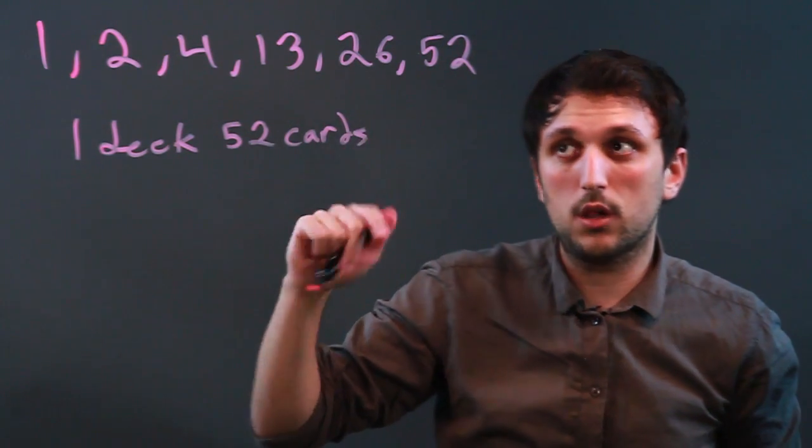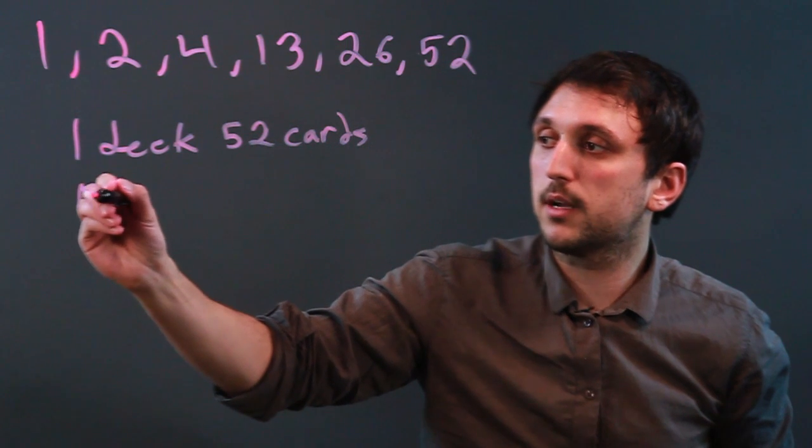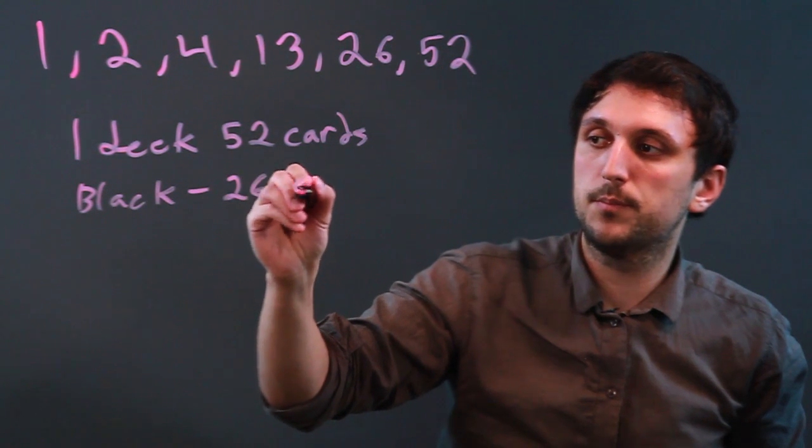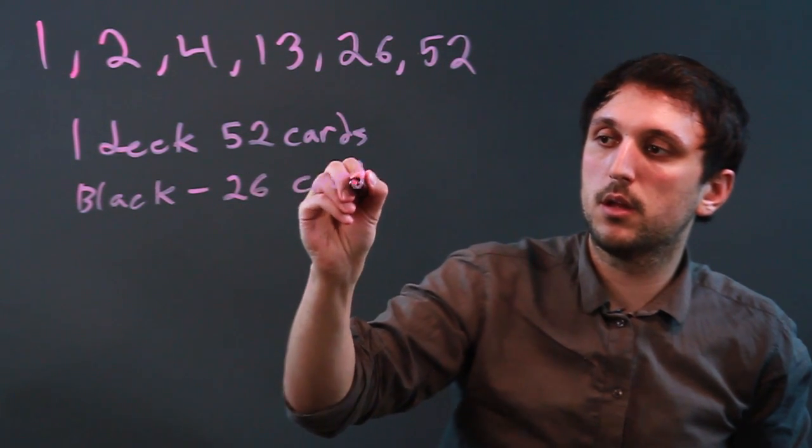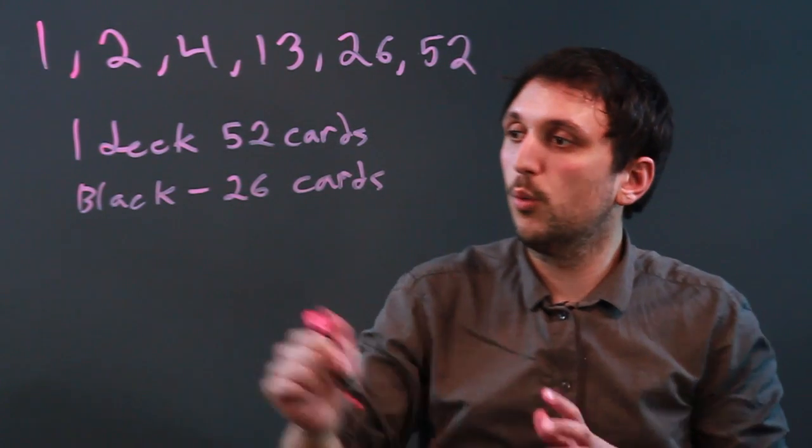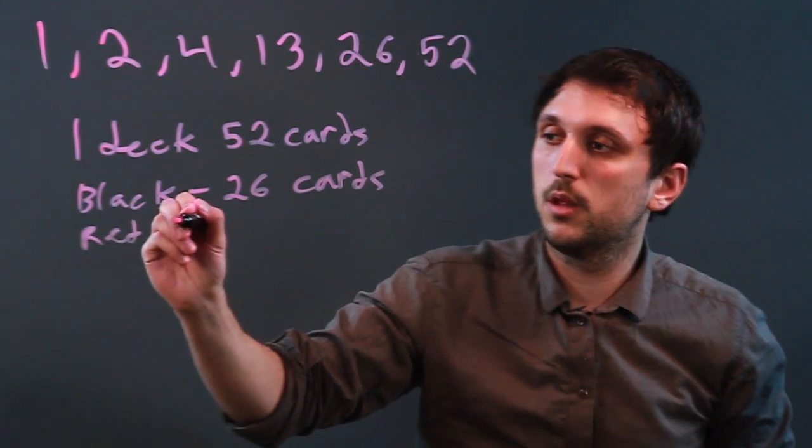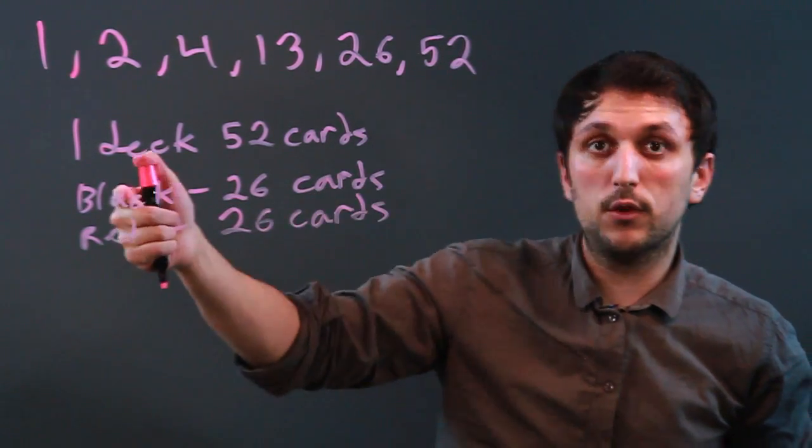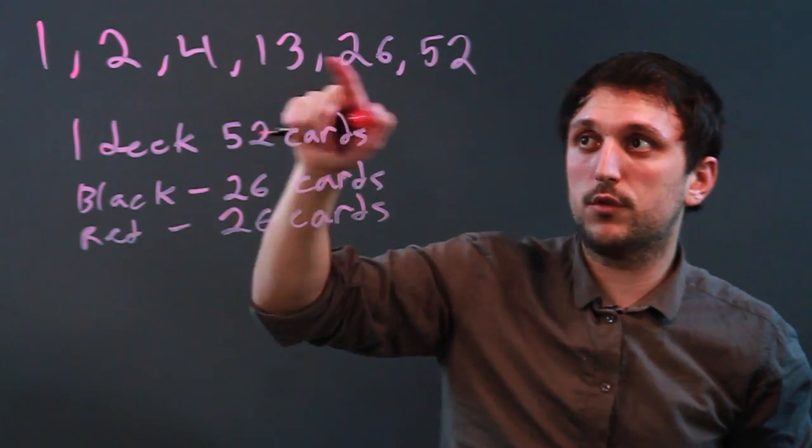There's the color, which is black or red, so black is 26 cards, and red is 26 cards. So you can say there's two colors and 26 cards, so 2 times 26.